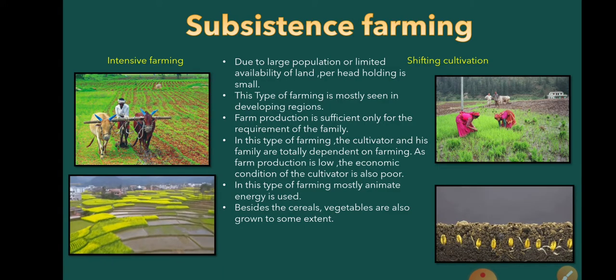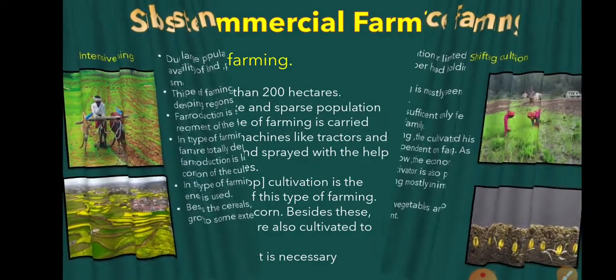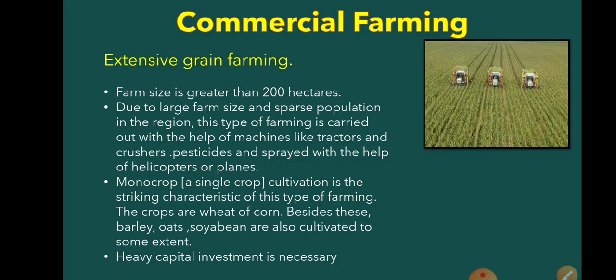So these are the two types of farming found in subsistence farming. The next is commercial farming, which is one of the famous occupations of today's generation. This is called extensive grain farming, where the farm size is greater than 200 hectares. Due to large farm size and sparse population in the region, this type of farming is carried out with machines like tractors and crushers. Pesticides are sprayed with the help of helicopters or planes. Monocrop — a single crop cultivation — is done on this area. Heavy capital investment is required. Problems like droughts and attack of pests can occur, which is why insecticides and pesticides are applied. This type of farming is carried out in temperate grassland regions.